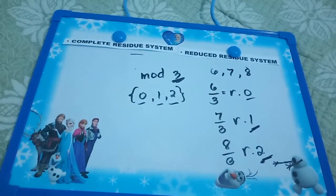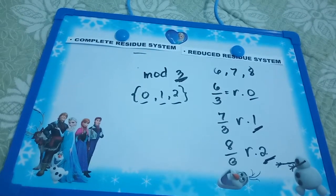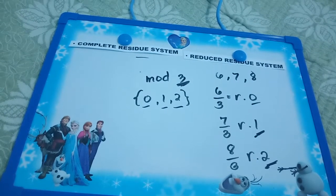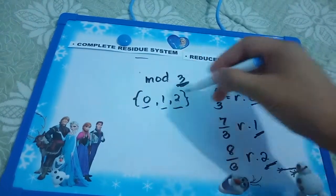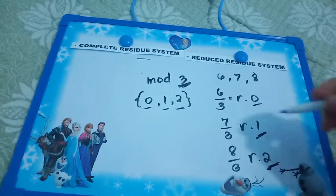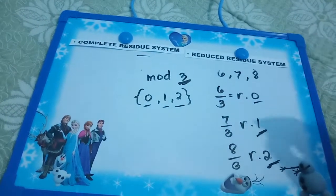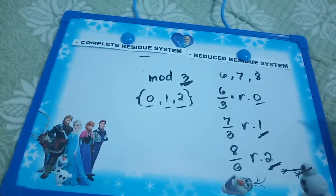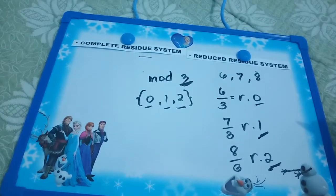A complete residual system modulo n is the set of integers which satisfy the condition that every integer is congruent to a unique number of the set modulo n. In other words, the set contains exactly one member of each residue class.